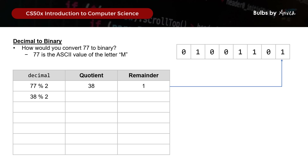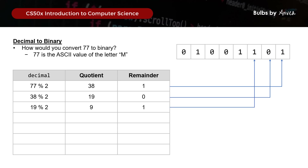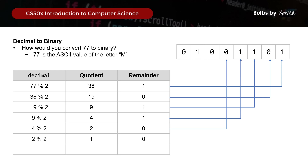Moving on, 38 modulo 2 gives quotient 19 and output 0, which goes into the binary array. Then 19 modulo 2 gives 1, 9 modulo 2 gives 1, 4 modulo 2 gives 0, 2 modulo 2 gives 0, and lastly 1 modulo 2 gives 1. Since we are working with 8 bits and the first digit is 0, that is how you get the binary value of 77.